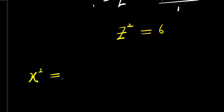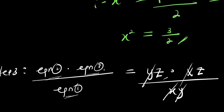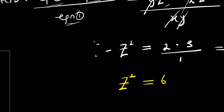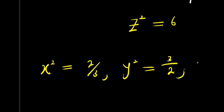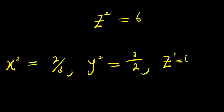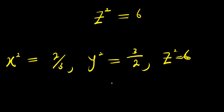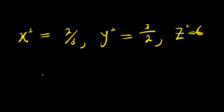So z squared equals 6. Let's write them all out: x squared equals 3 over 2, y squared equals 2 over 3, and z squared equals 6. Now how do we solve for x plus y plus z?